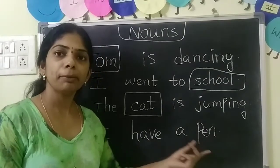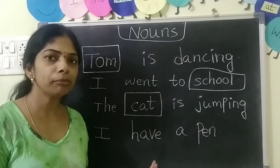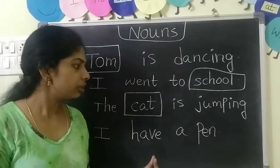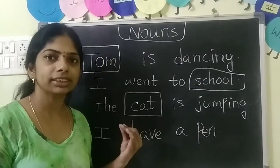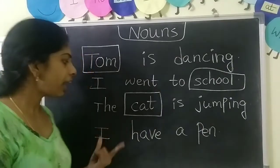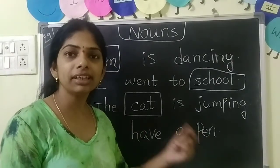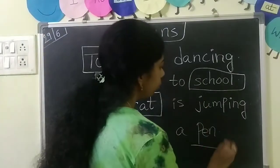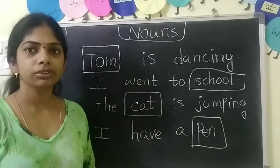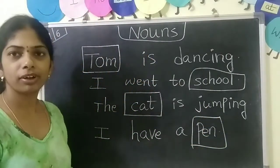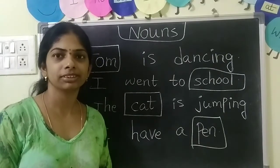I have a pen. Is there any thing here? Yes — where is the thing? Pen. I have a pen — pen is a thing, so it is a noun. Hope you understood, children. Practice this — I will give a worksheet on this.